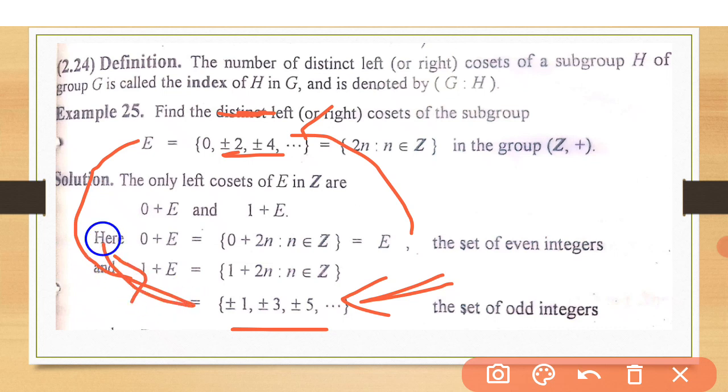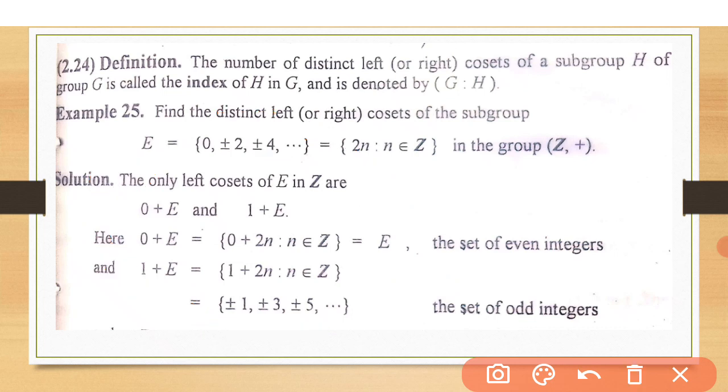So this makes the partition of Z. This distinctness gives us a message that when we make the union of E and 1 plus E, it gives us Z. It makes complete Z. It means that E and 1 plus E is a partition of Z.